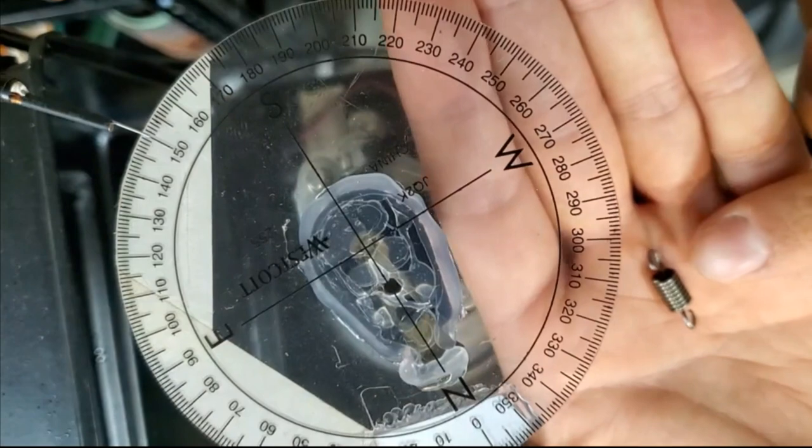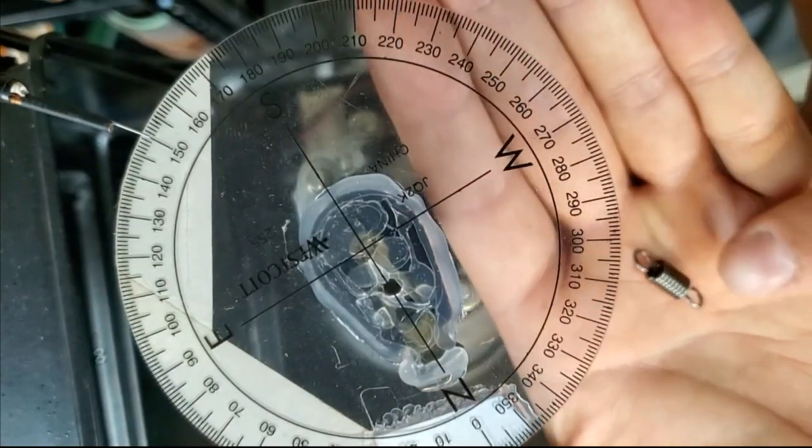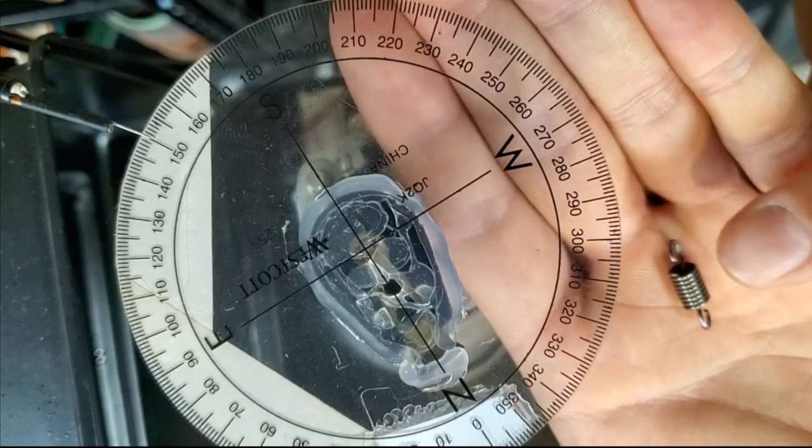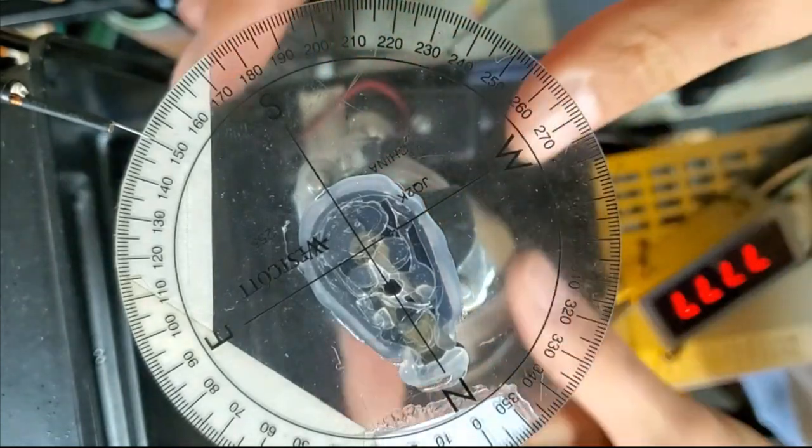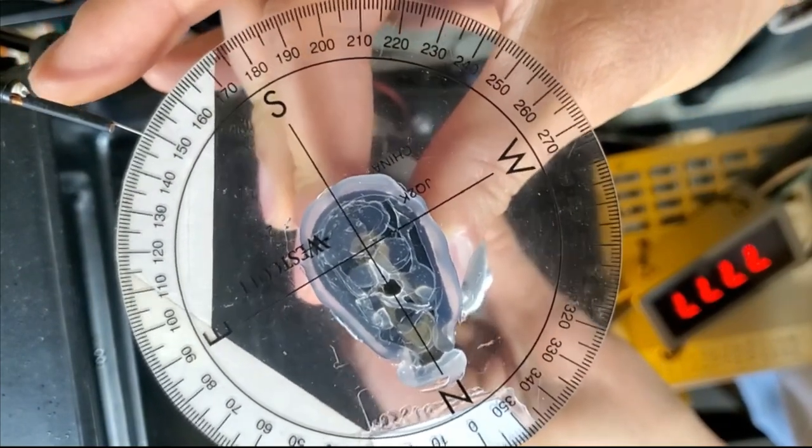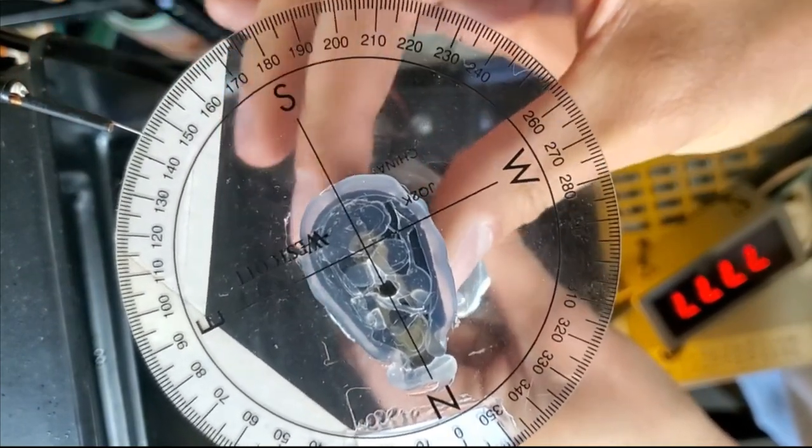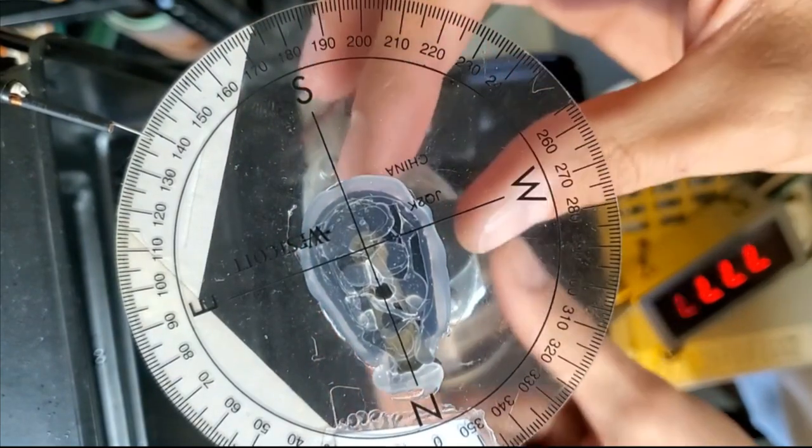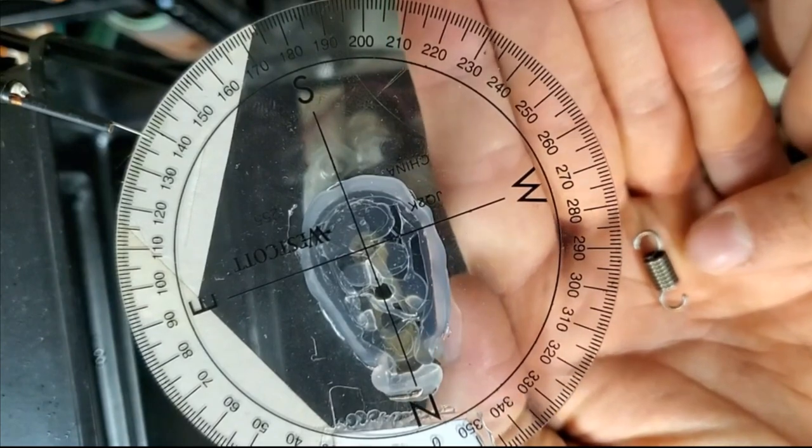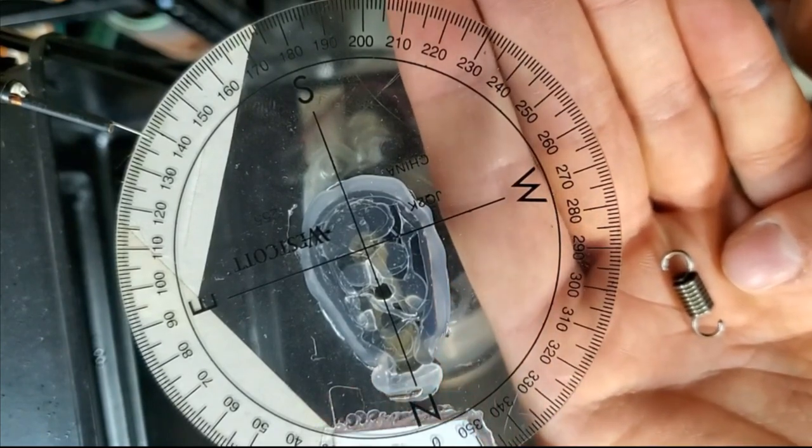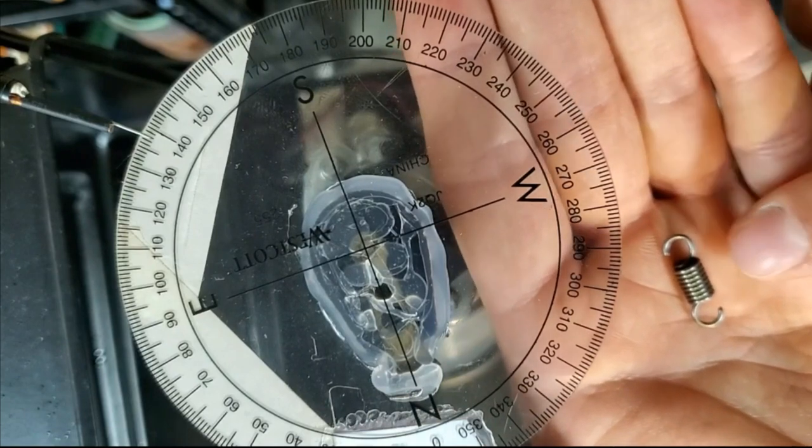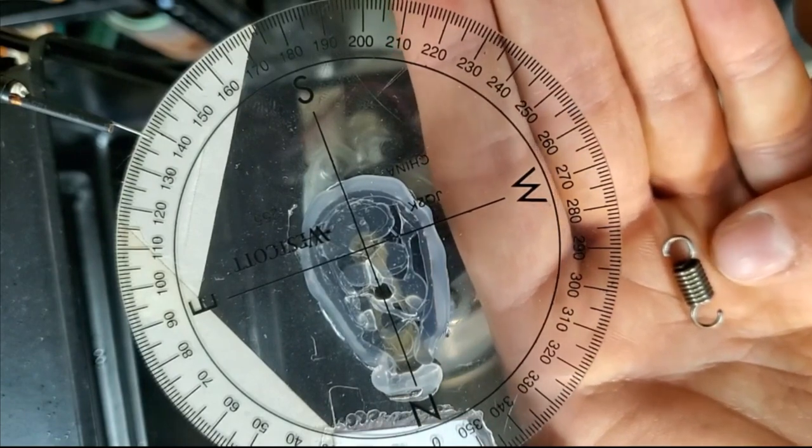One thing I need to do with these springs is I need to make adjustments to the loops so that it provides the correct amount of free play. The free play refers to the amount of motion that the distributor has on the primary spring before the secondary spring engages. In this situation, I want the secondary to come in at approximately five and a half degrees before this one does anything. From five and a half to 11 degrees, this spring and the primary spring will be working together, but before five and a half degrees, this one will not be doing anything.